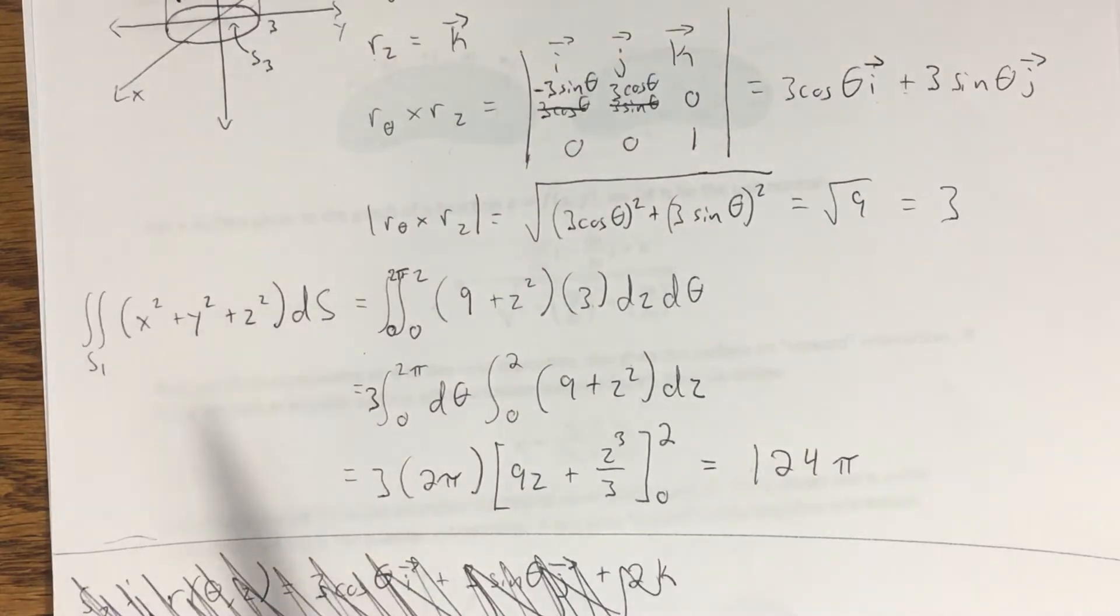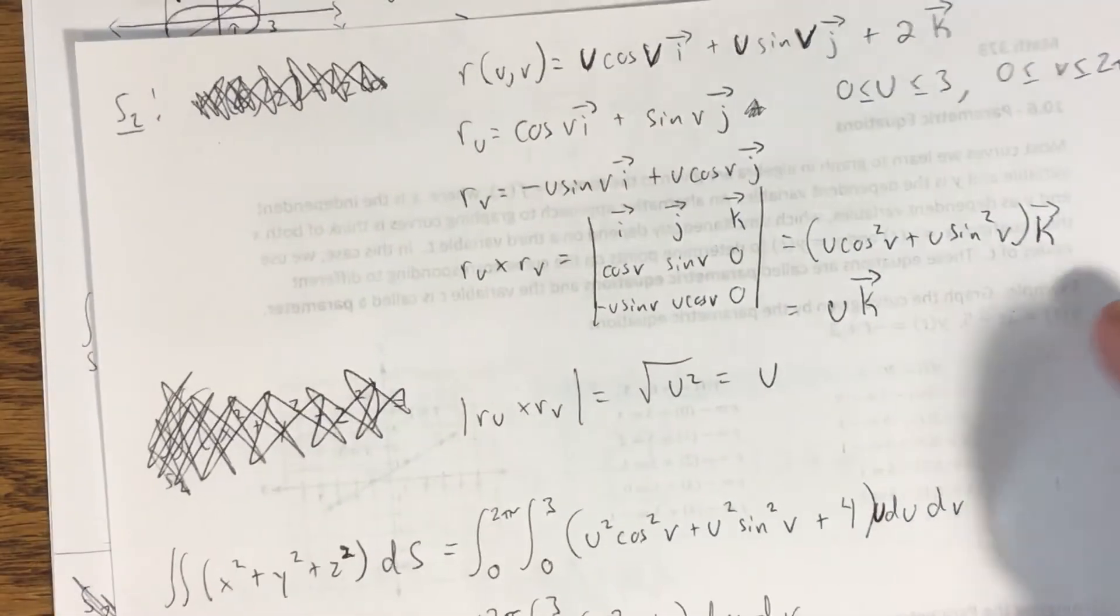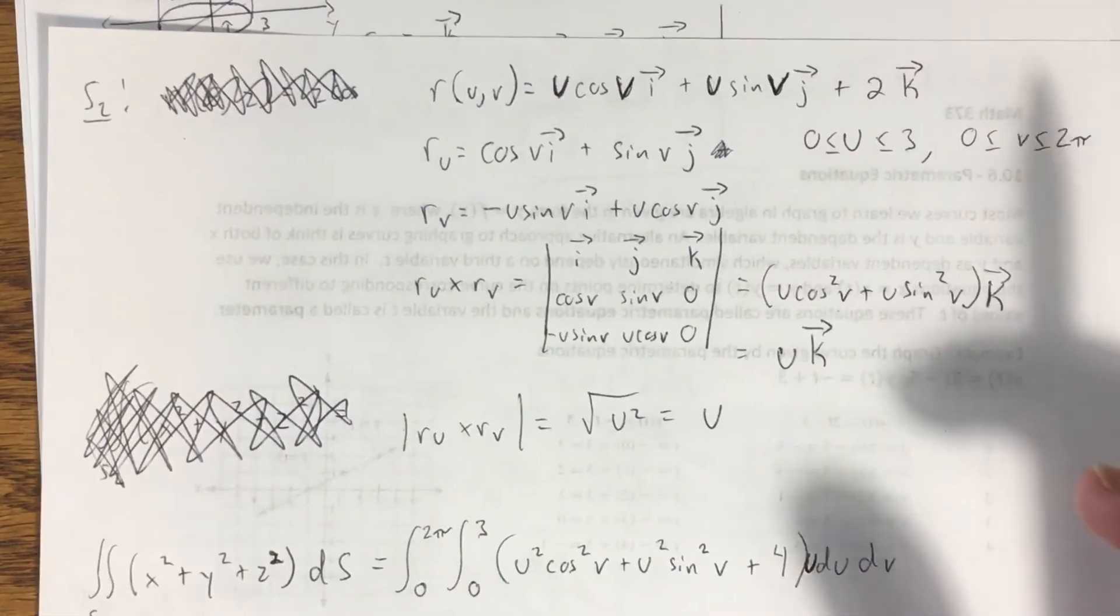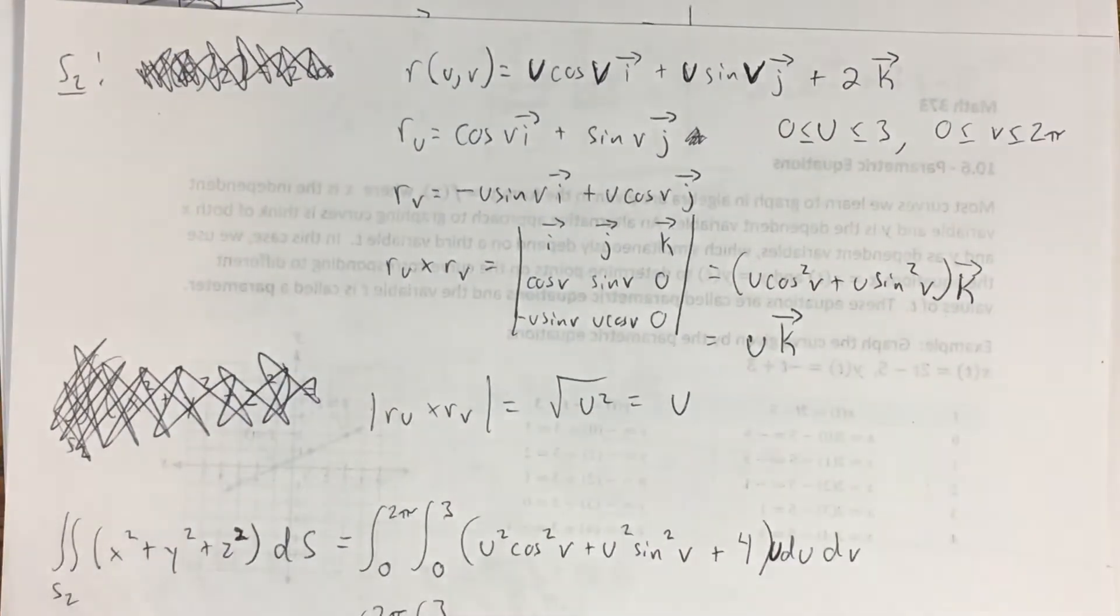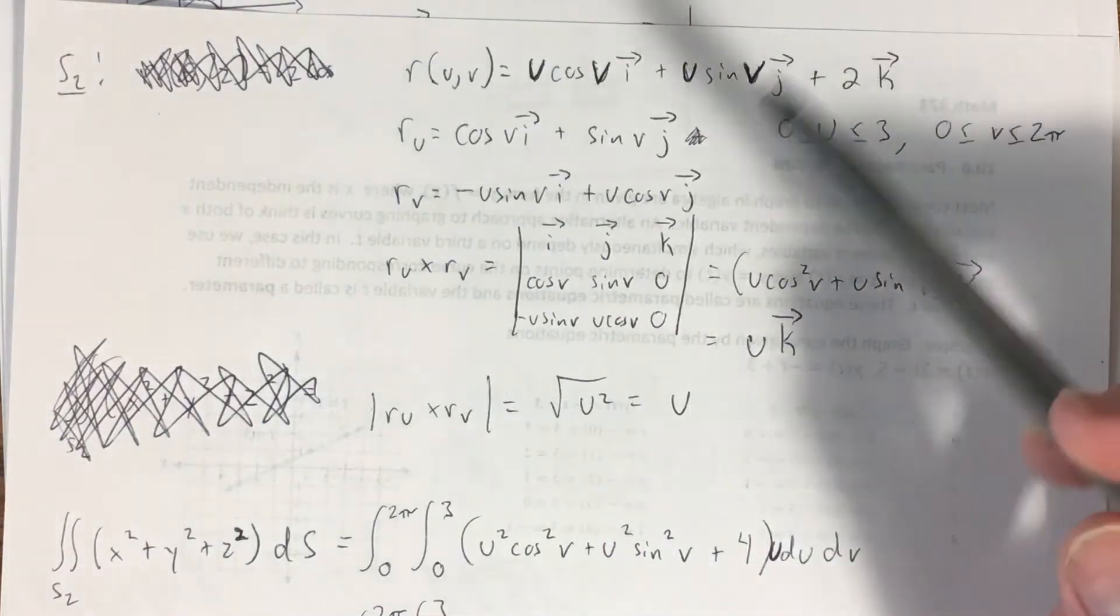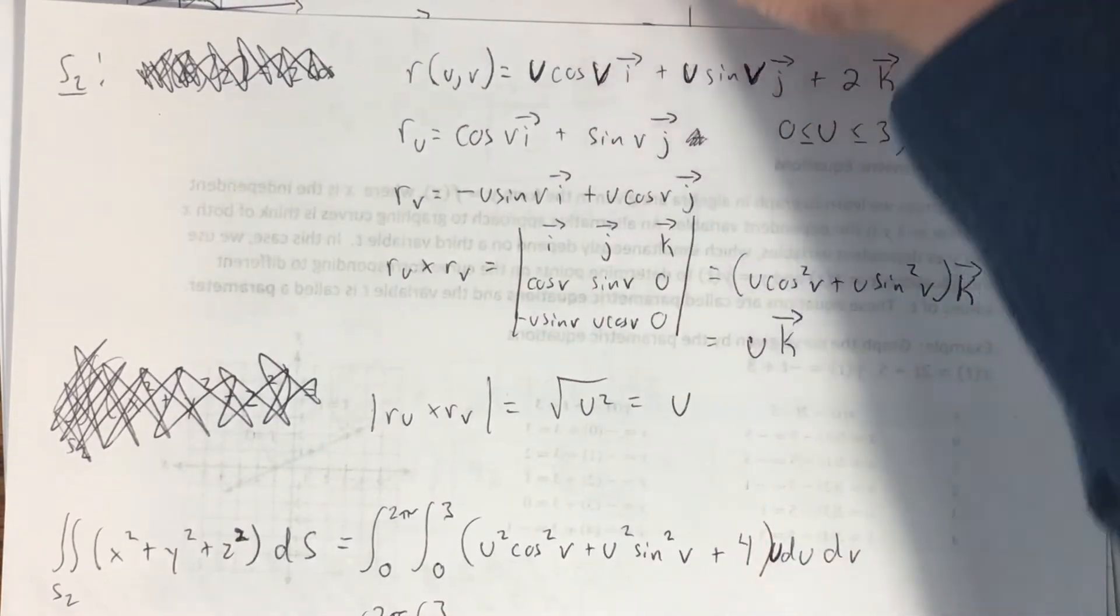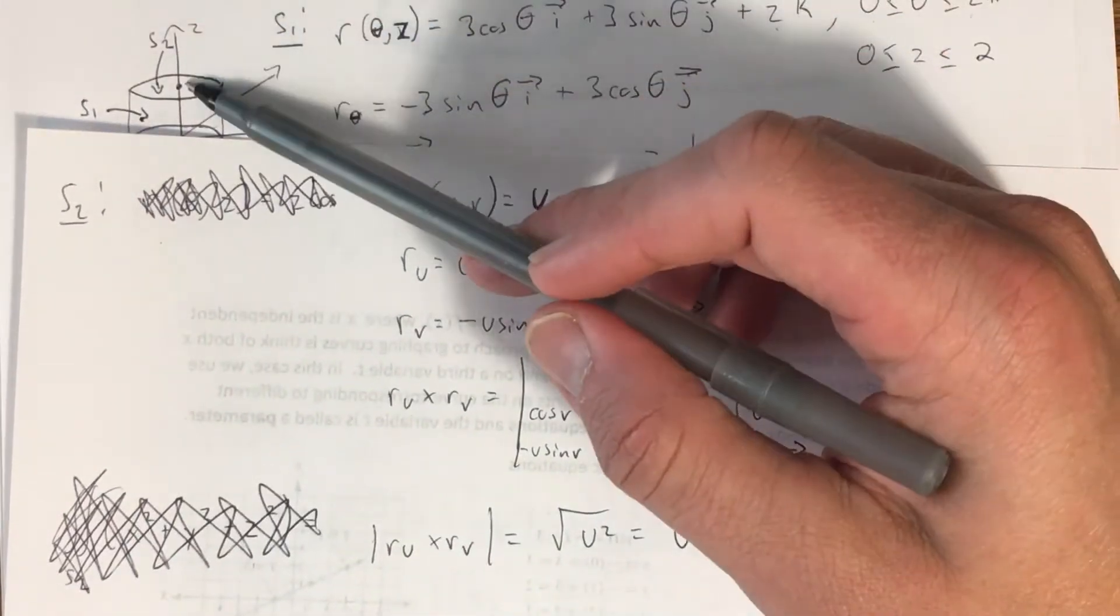Okay, I know I went through that super quick, and there is more to this problem because we have to deal with the other two surfaces. But hopefully you can make sense of that. Now, the second surface, S2, you can see I made a couple other mistakes as I work through this. You're going to make some mistakes as you go through these problems, I guarantee it.